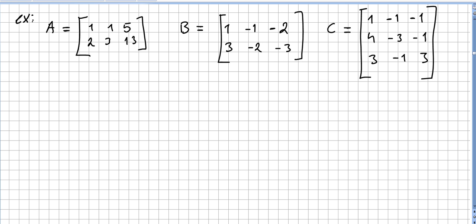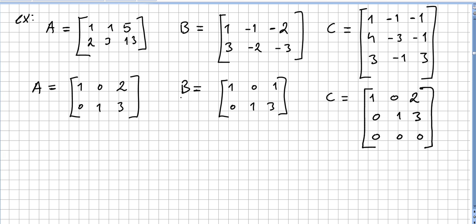Let us do a quick exercise. Let A = [1 1 5; 2 3 13], B = [1 -1 -2; 3 -2 -3], and C = [1 -1 -1; 4 -3 -1; 3 -1 3]. Let us see if these three matrices have the same row space. Matrices have the same row space if and only if their row canonical forms have the same nonzero rows.